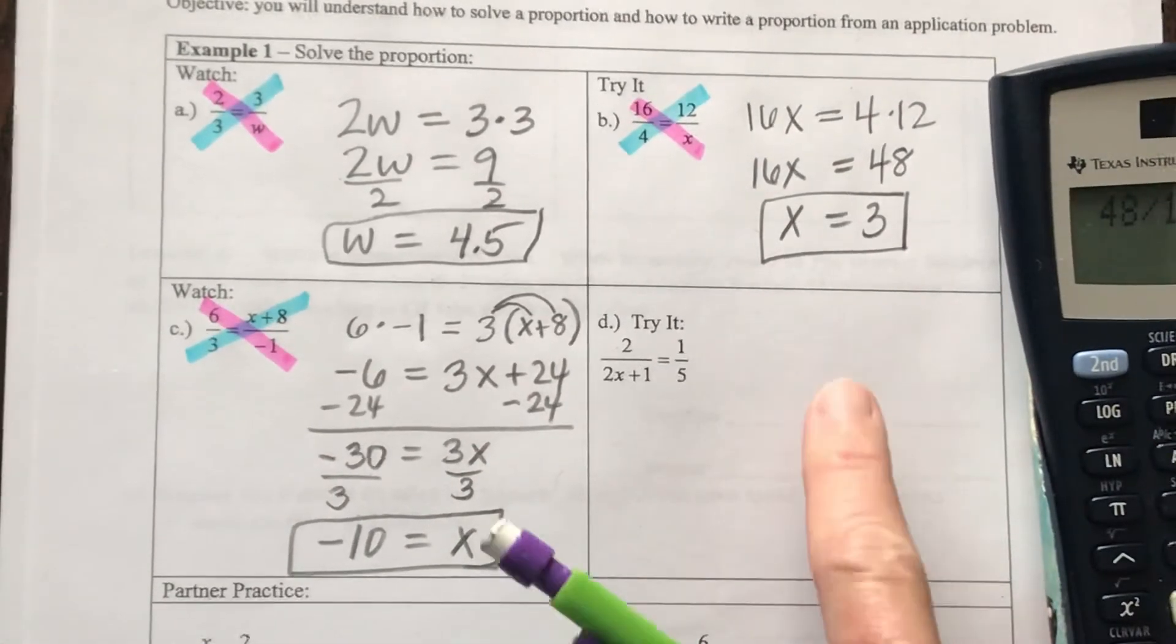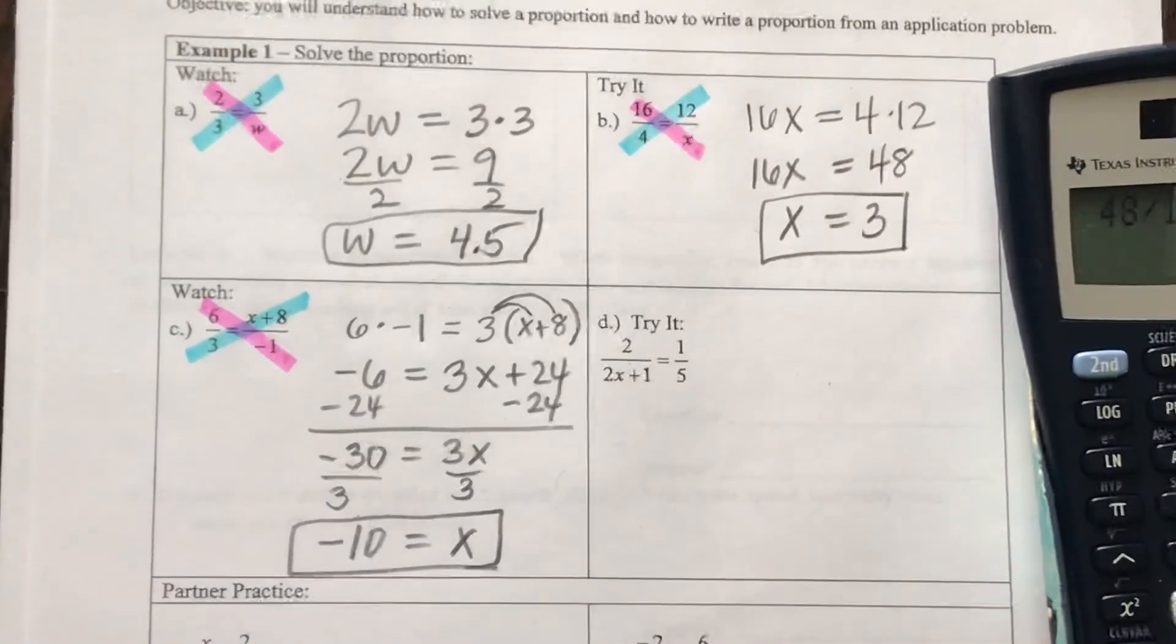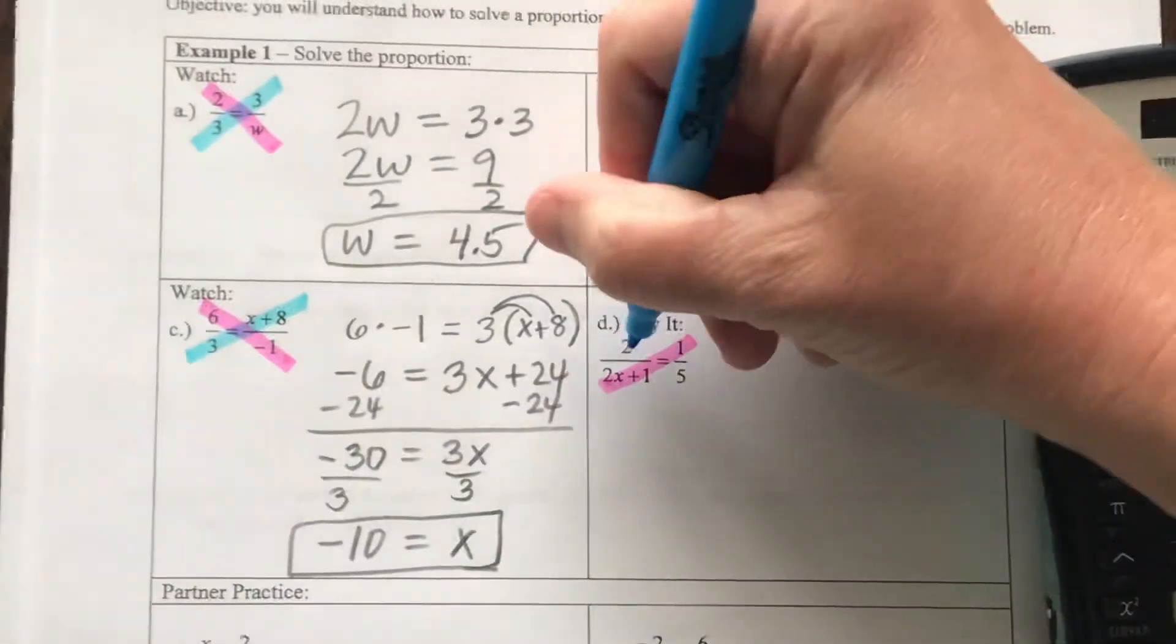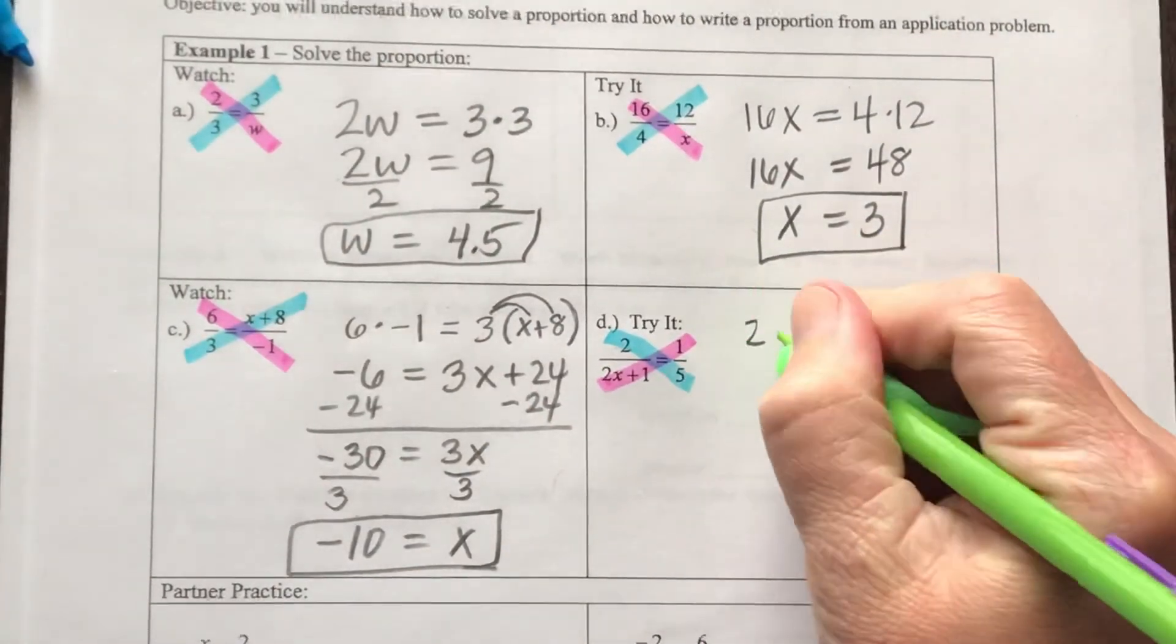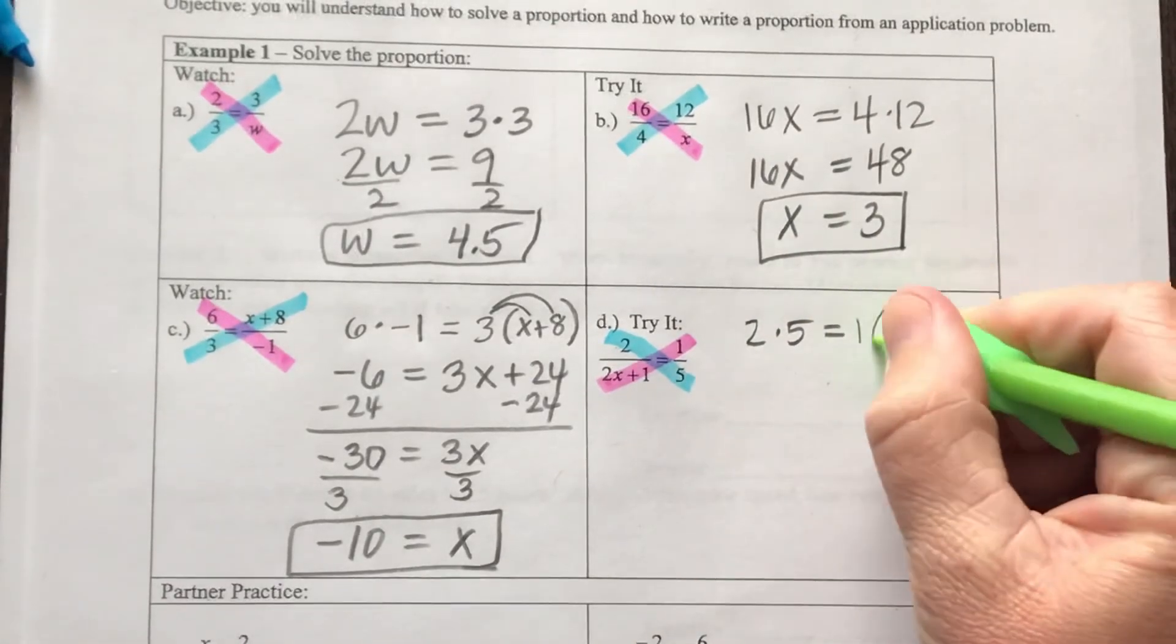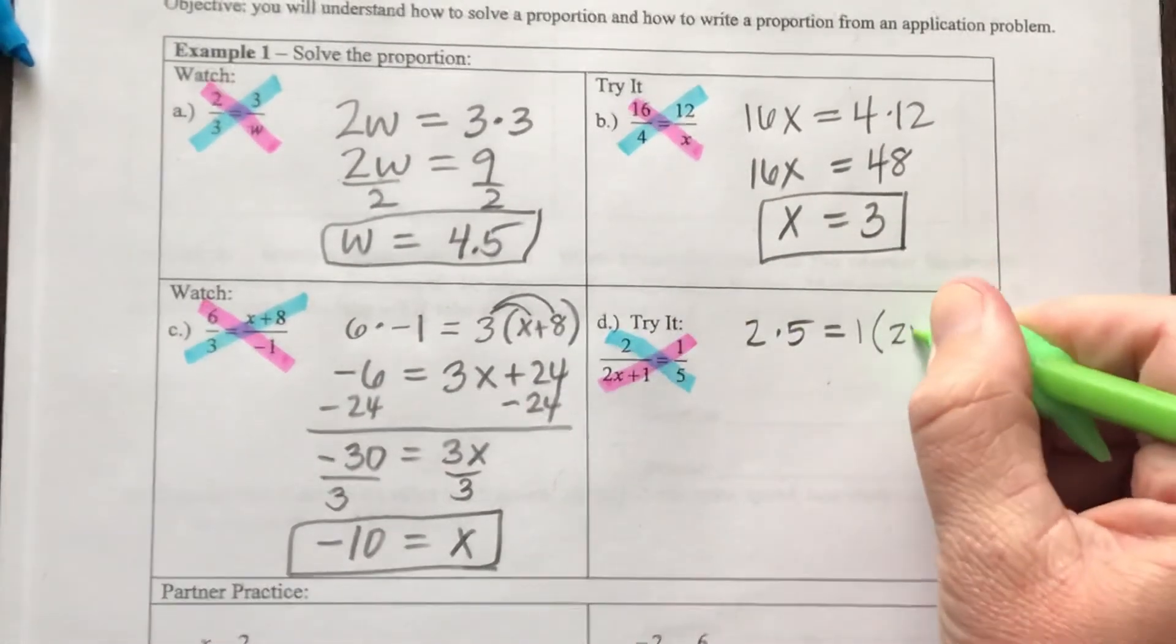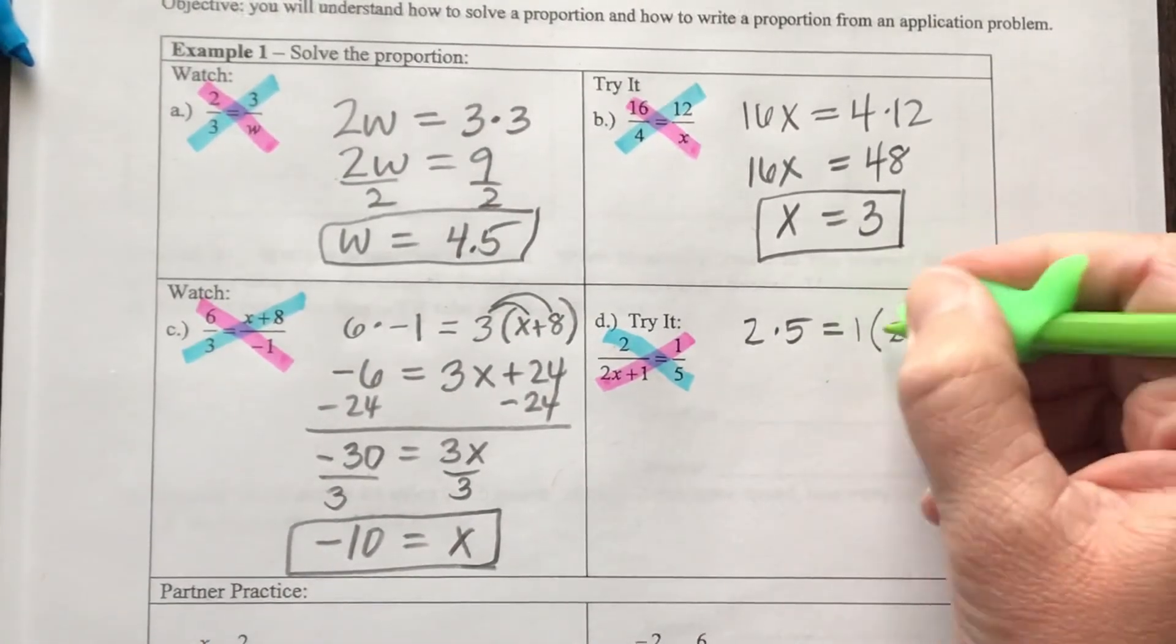If you want to, pause the video and try this one and see if you get the same answer that I do. Okay, so if we cross multiply here, I'm going to have 2 times 5 for one of the cross products. And then 1 times the group 2X plus 1. So now I need to distribute my 1.